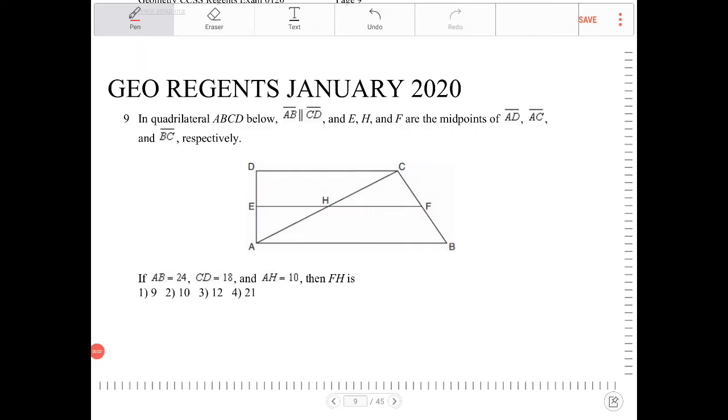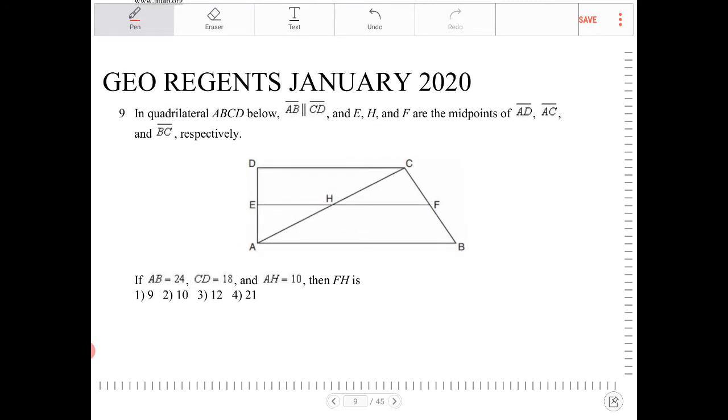In quadrilateral ABCD below, AB is parallel to CD. So let's label that. I know that these two sides are going to be parallel. E, H, and F are midpoints of AD, AC, and BC respectively. So let's label those.